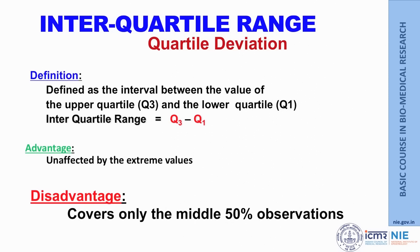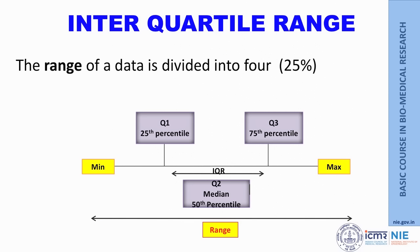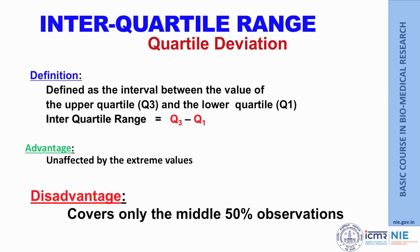Another measure is the interquartile range (IQR), which addresses the problem of extreme values. We divide the data into four quarters, remove the first and last quarter, and consider only the middle fifty percent of values. The IQR is Q3 minus Q1. Its advantage is that it is not affected by extreme values, but its disadvantages are that it covers only the middle fifty percent of values and still uses only two values, ignoring those in between.